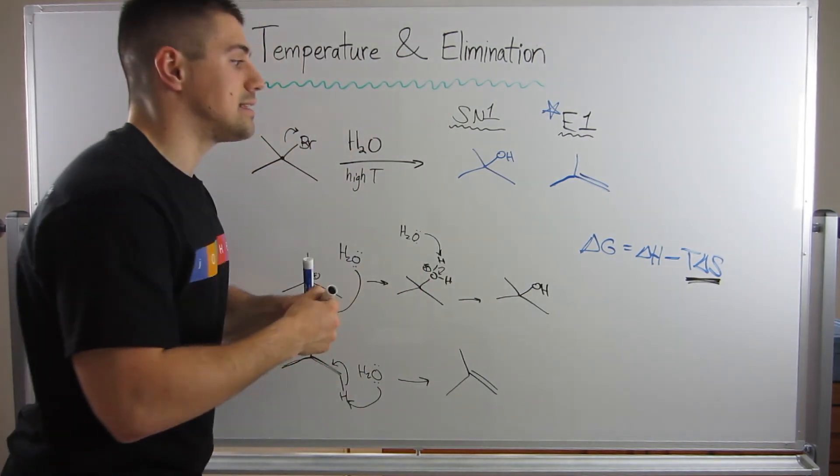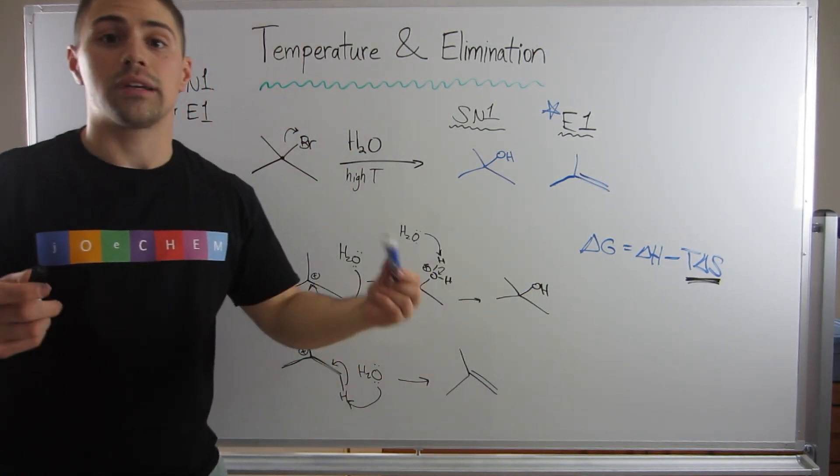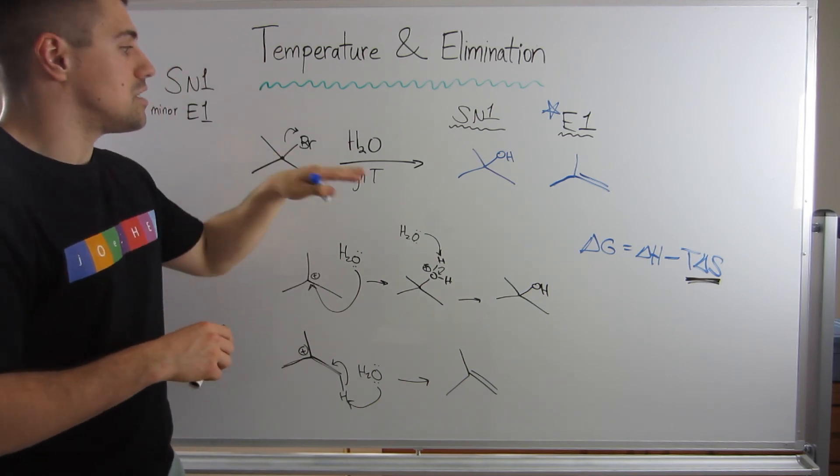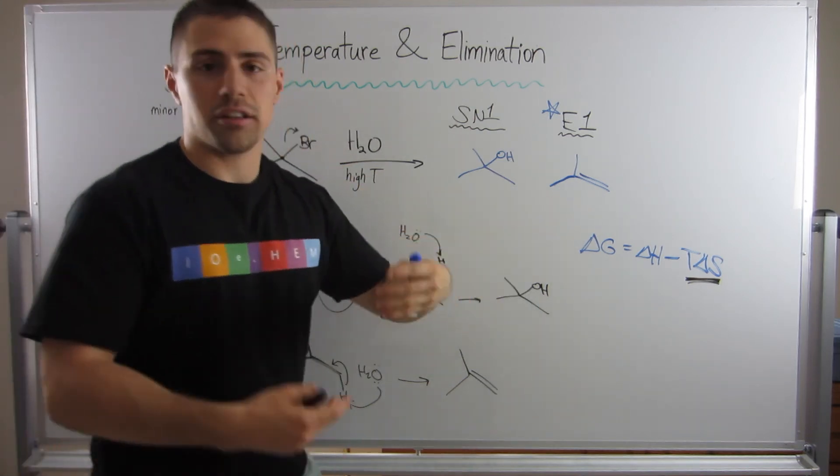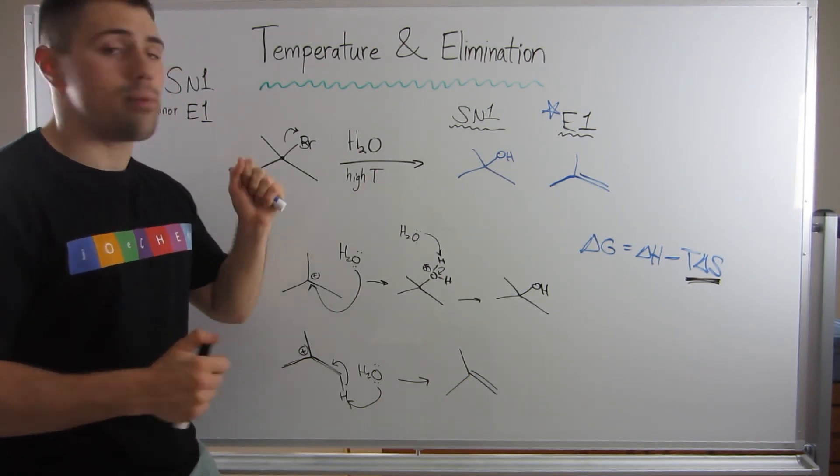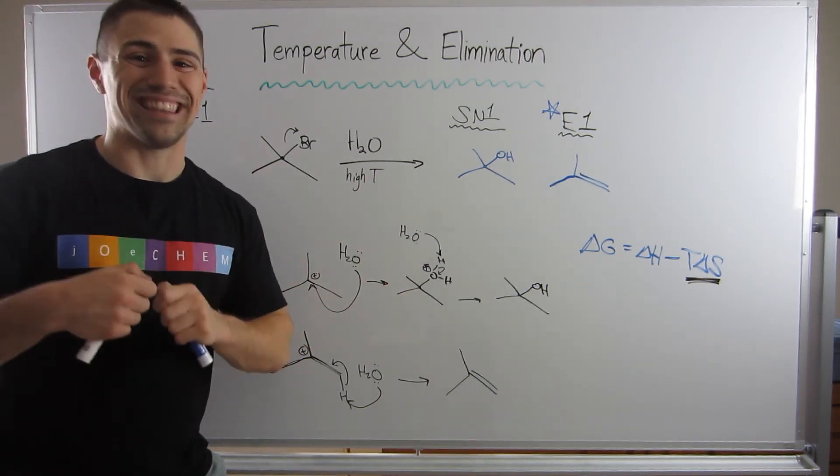By cranking up the heat, the good entropy part of this equation becomes more prominent. Delta G becomes more negative. The reaction is more spontaneous, the elimination reaction. So it is a nice little hack to make your E1 product more prominent. Okay gang, so now you're totally knowledgeable about temperature and elimination. See you in the next video.